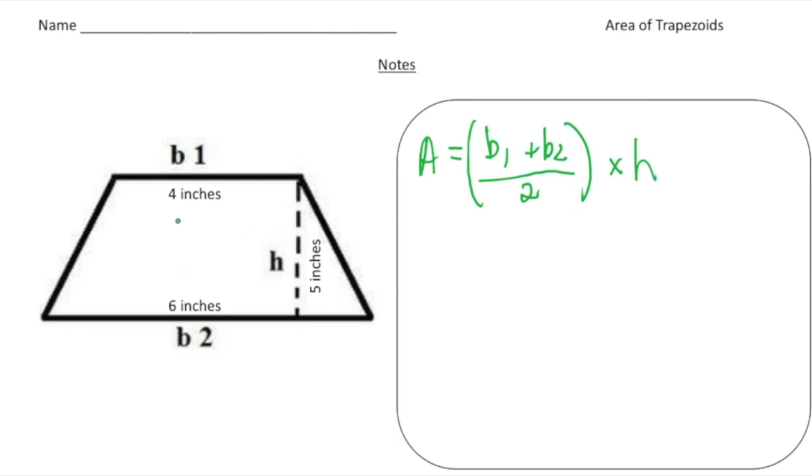So for here we have two bases. We have base one is four inches and base two is six inches. So the area is going to be four plus six and then divided by two and then times the height.